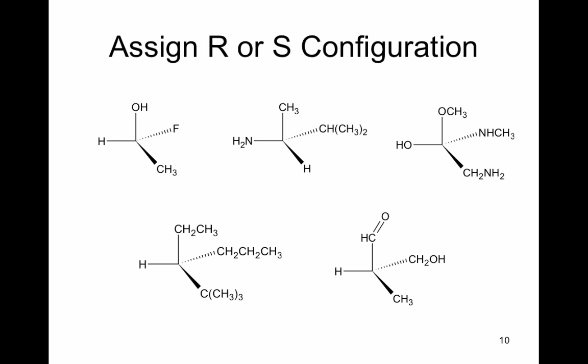Here are the configurations again. Pause the video, assign priority to each of the groups, then come back and check them. For the first example — previously established as fluorine number one, hydrogen number four — we need the lowest priority away from us. Because hydrogen is on a dashed line, viewing from that direction, one, two, three goes counterclockwise, so this configuration is S.